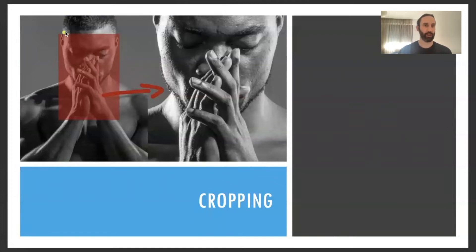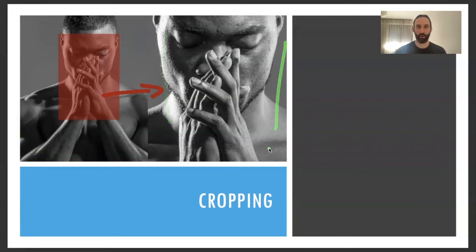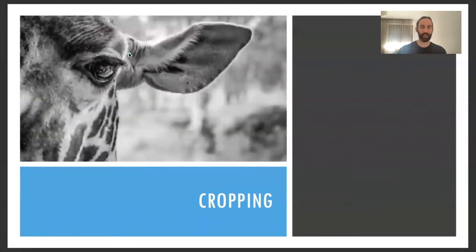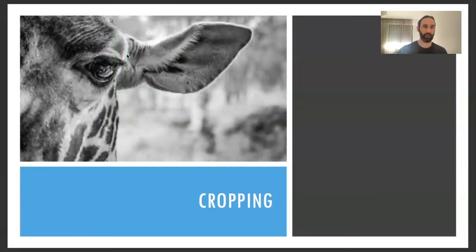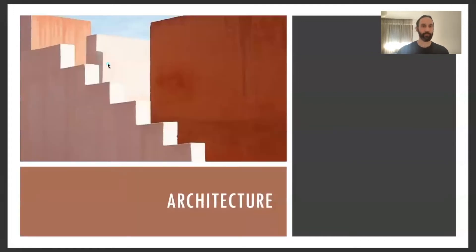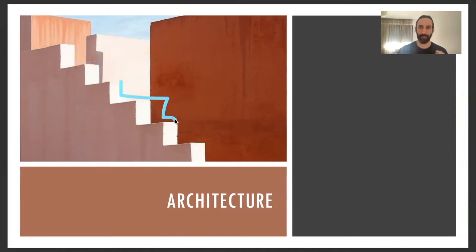Here we can see a photo of a subject that was originally taken with the camera further back, but when cropped we get a more effective and impactful image. Here we have a more abstract image of a giraffe — probably originally a full face photo — but with cropping we can follow the rule of thirds and make a nice abstract image that kind of stands out. Architecture can also be really effective when you crop in and look for good use of colour.